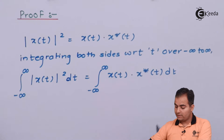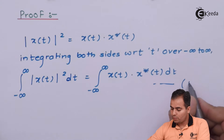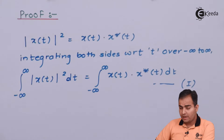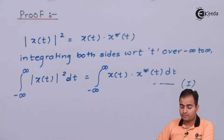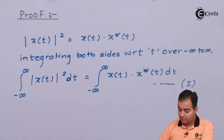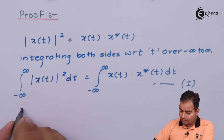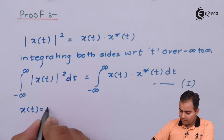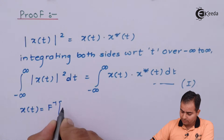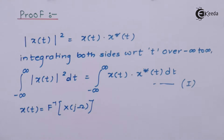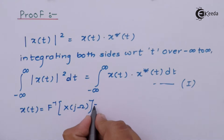Let us call this equation number 1. We have studied the inverse Fourier transform definition. According to the definition of inverse Fourier transform, x(t) is the inverse Fourier transform of x(jω).